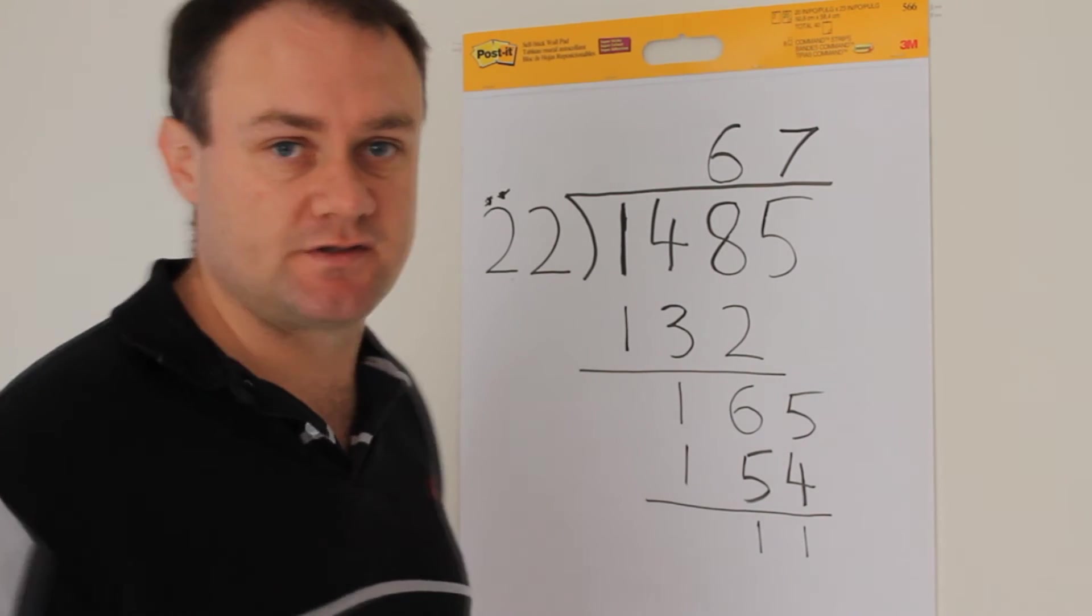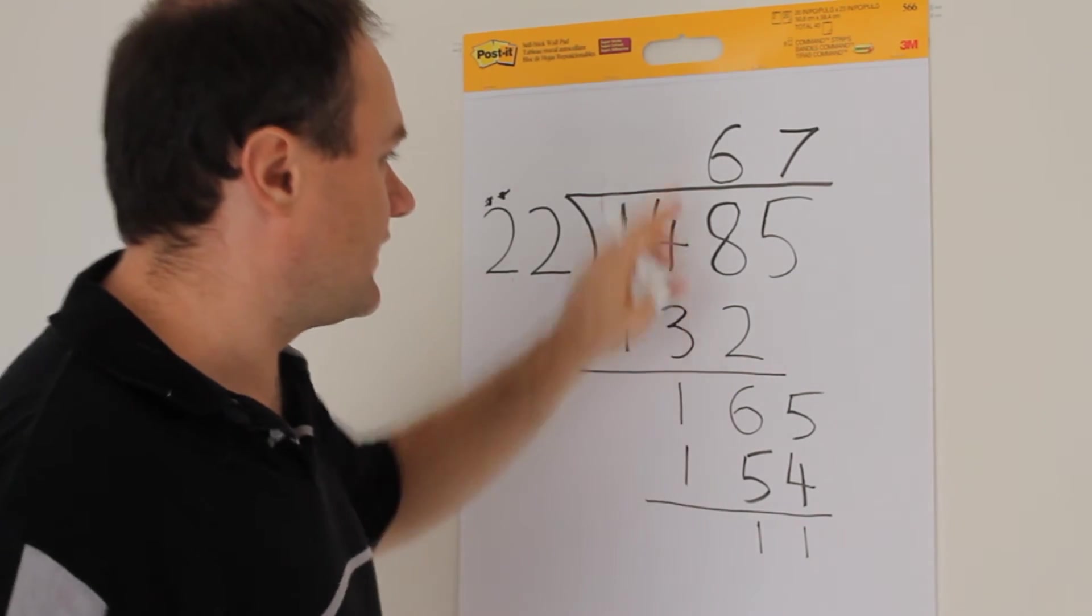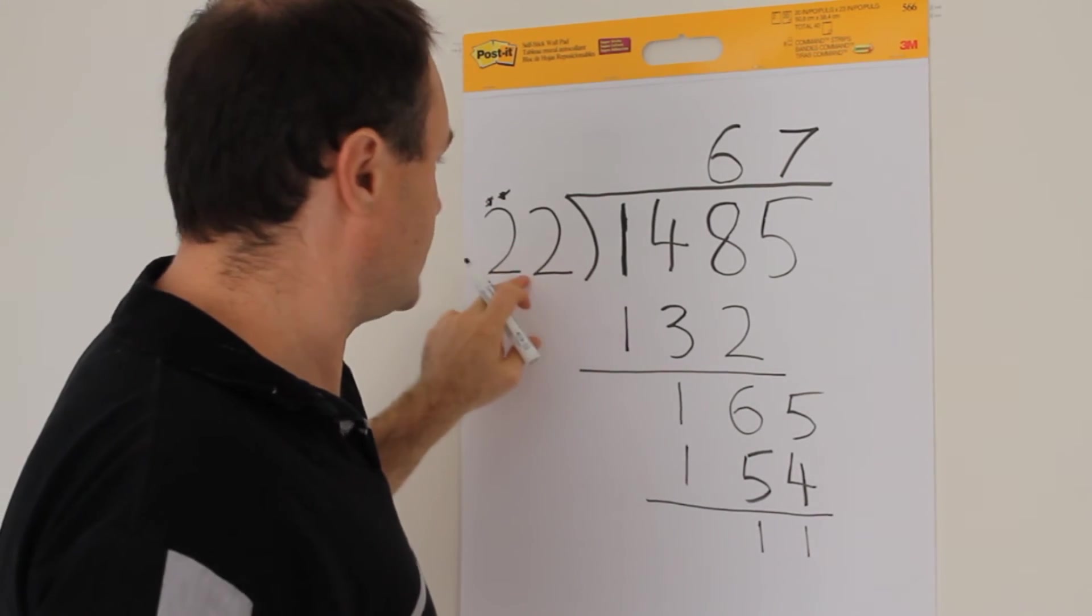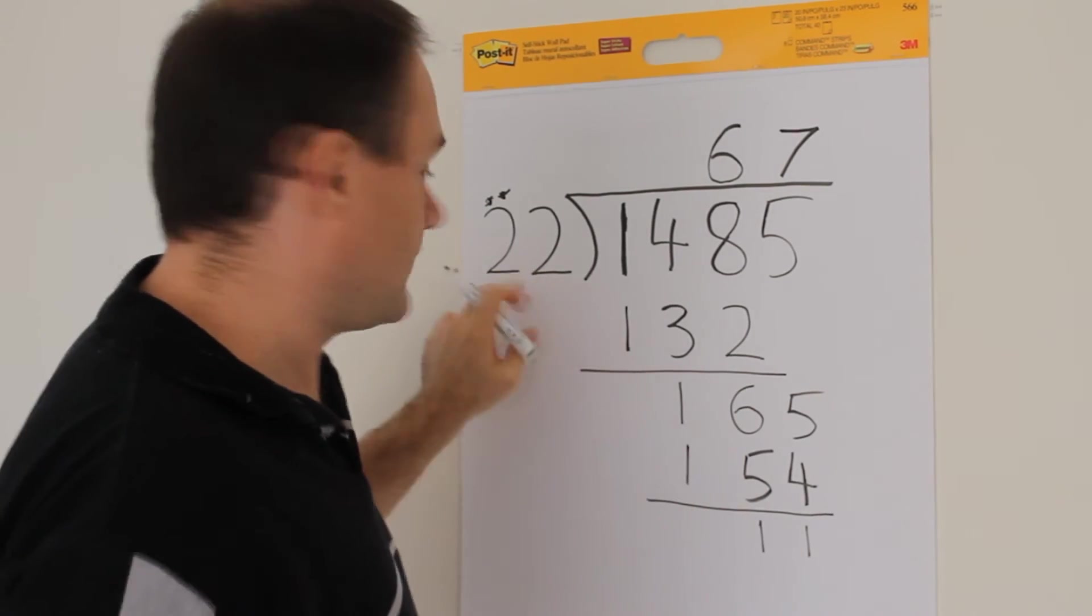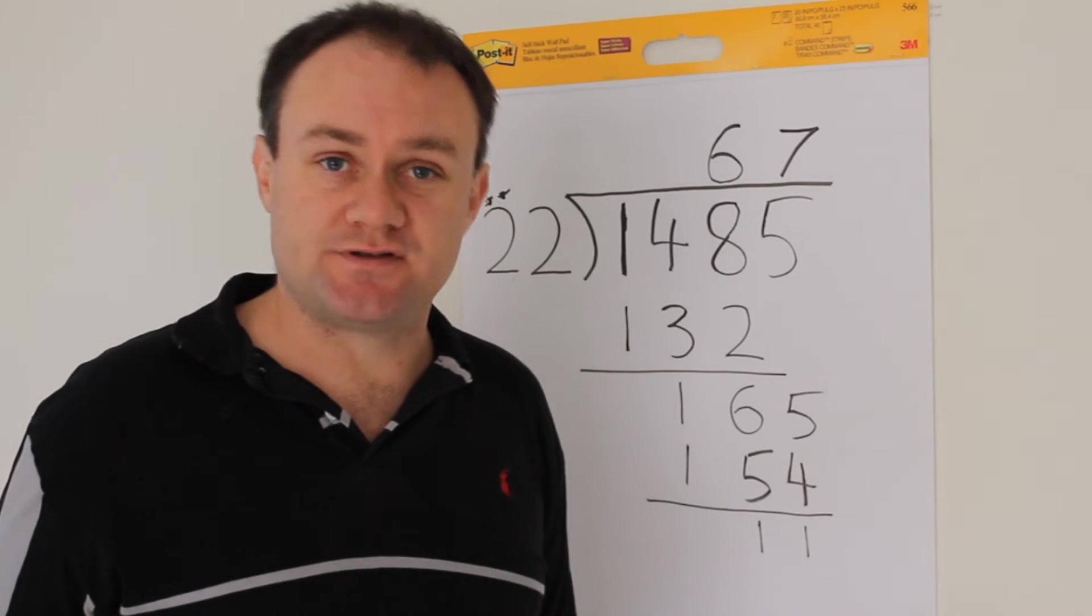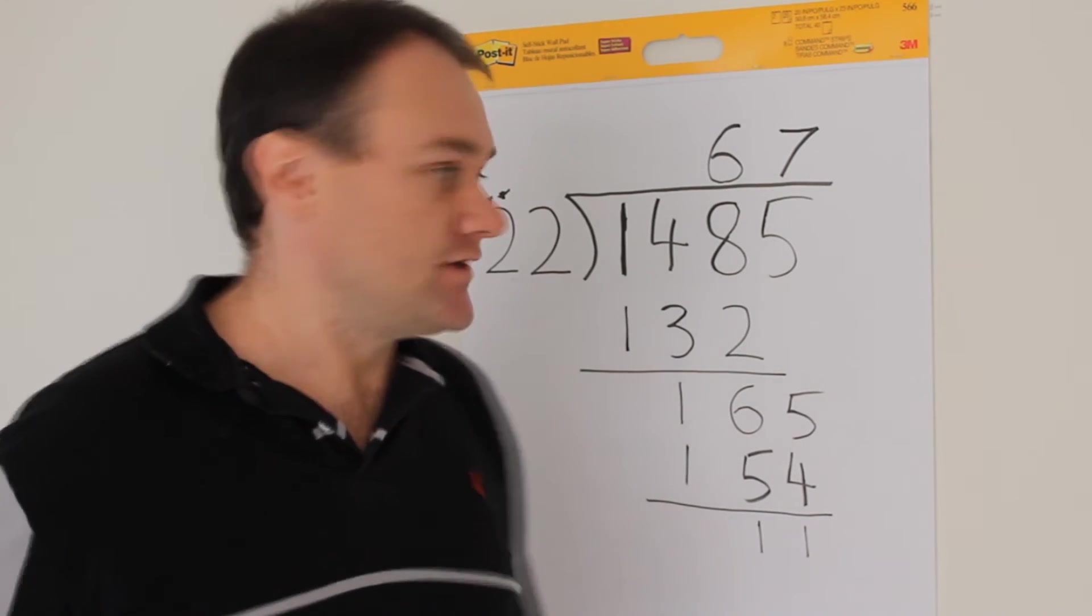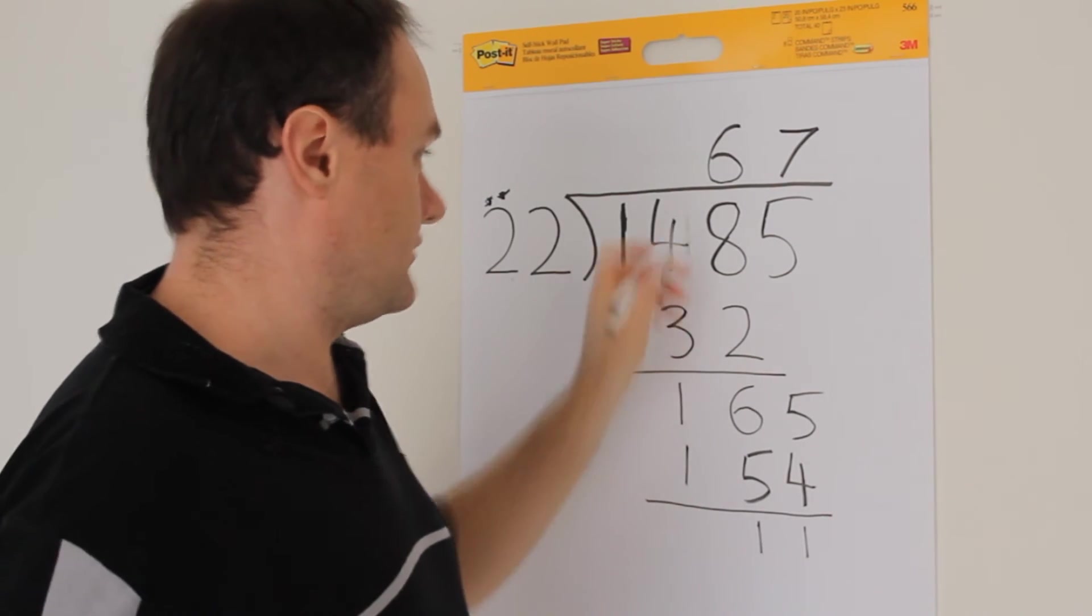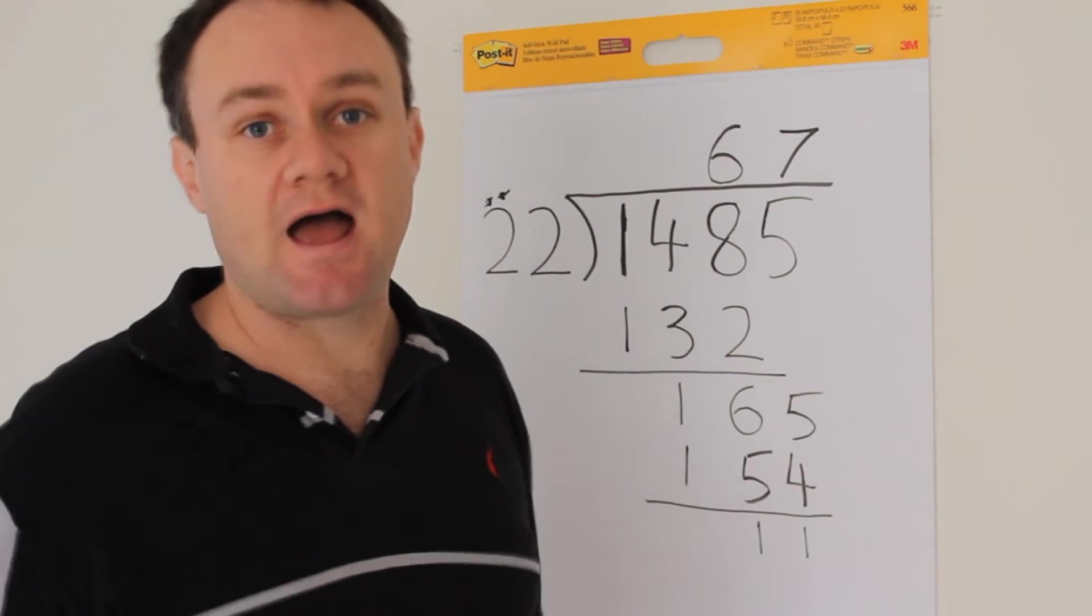So let's do it to a fraction first. We know that we are left with 67 and 11 over 22. And 11 over 22 happens to nicely be a half. So you could write a half as the answer, and the answer is 67 and a half.